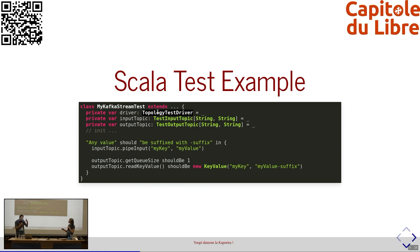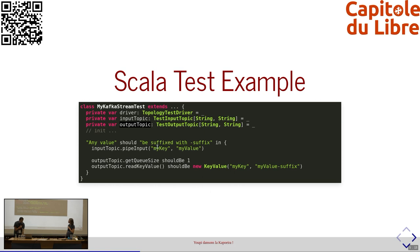On instancie un faux Kafka, et on définit ce qu'on appelle la Topologie : sur un Kafka Stream, c'est décrire les entrants et les sortants. L'entrant, dans mon exemple, c'est un simple Topic avec une clé String et une valeur String. Un Topic sortant — output Topic — est aussi typé String/String. Le Topology Test Driver est un simple test unitaire qui décrit, dans le scénario, une émission de clé-valeur en entrée — myKey, myValue — et on asserte qu'en sortie on a bien un élément, que la clé est restée myKey et que la value a été modifiée avec un suffixe.